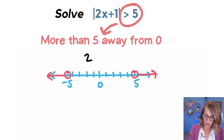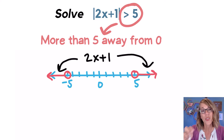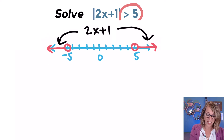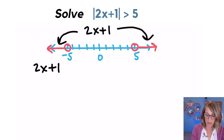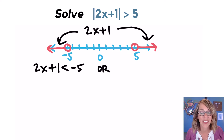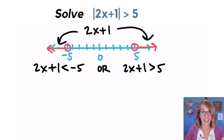So this means that 2x plus one can live either on that side or on that side, and that's going to give me two inequalities. These two cases are pretty consistent every time, which makes it nice. On the first side, I'm going to take the 2x plus one — notice I no longer have the absolute value bars. In this case, I am less than negative five. So I'm switching my original symbol to a less than and making the number negative, so less than negative five. I connect these with an OR because I can't be in two places at the same time. And for the other one, I am more than five, so 2x plus one is greater than five.